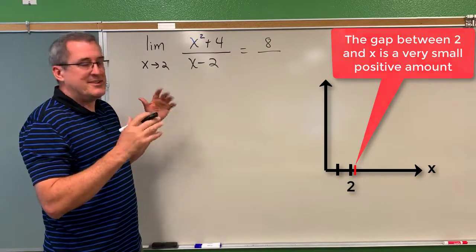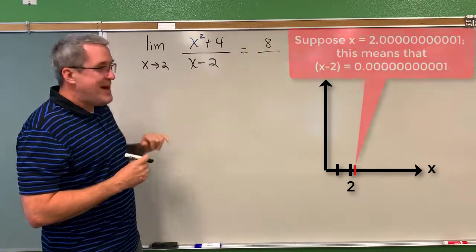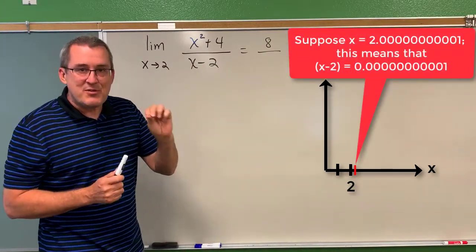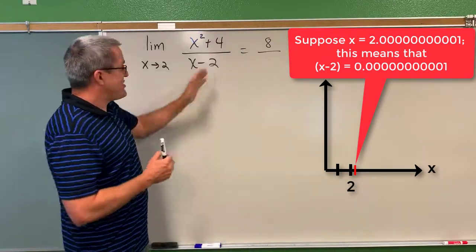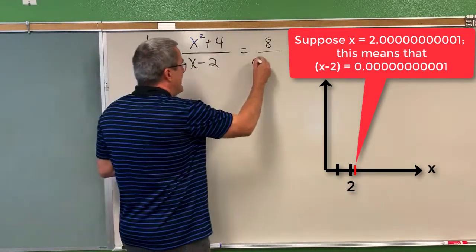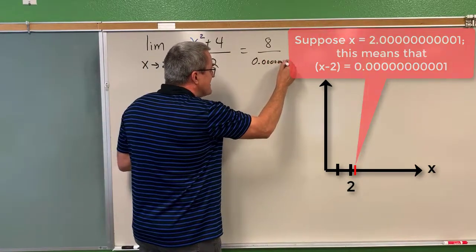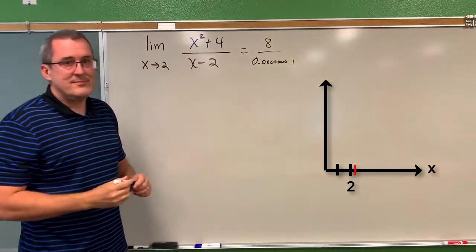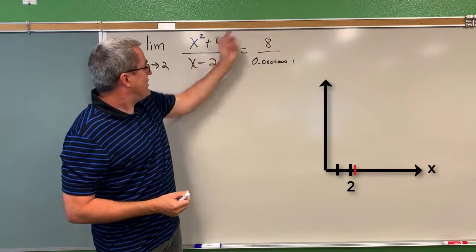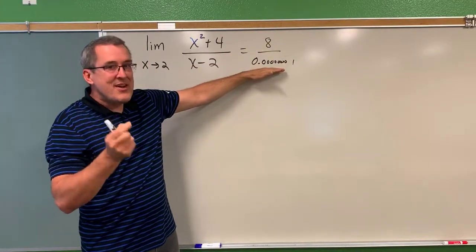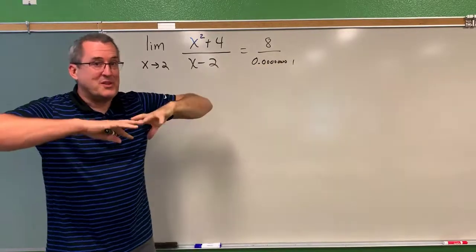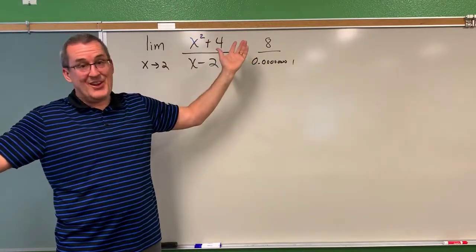Just for sake of illustrating this idea imagine that x is 2.000000001 and you subtract 2. The result will be 0.000000001. Now if you take an 8 or nearby to 8 and divide by this very very very small number the result is going to be a very very very large number.